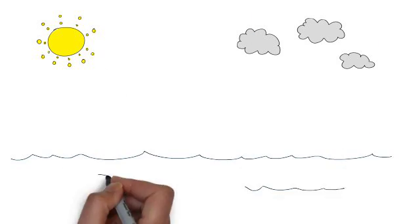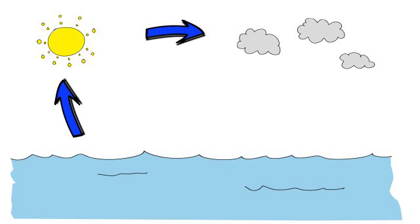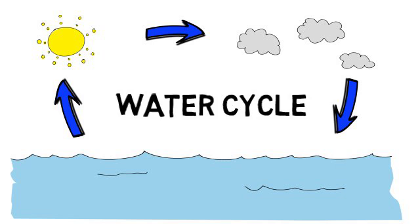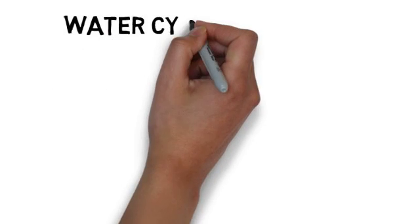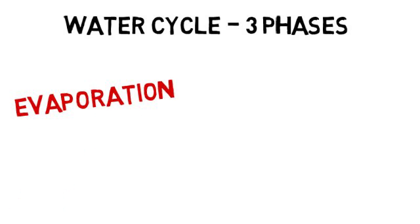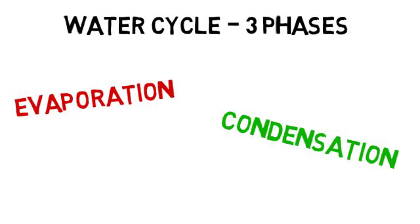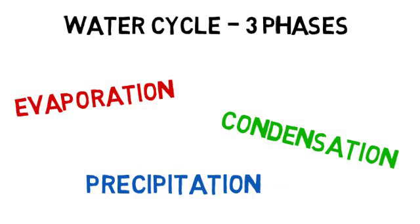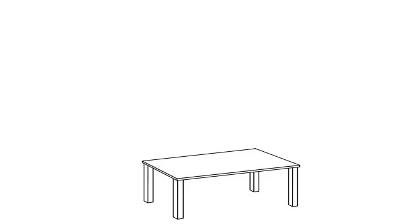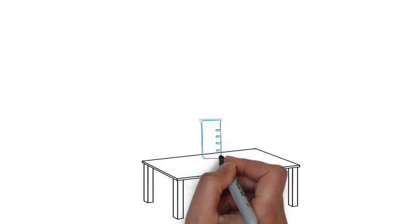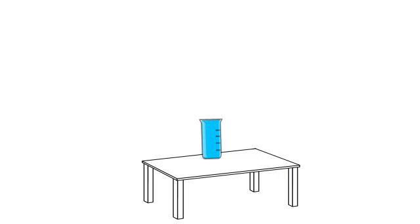Hello everyone, in this video we are going to talk about the water cycle. The water cycle consists of three phases: evaporation, condensation, and precipitation. Let's talk about each phase of the water cycle.